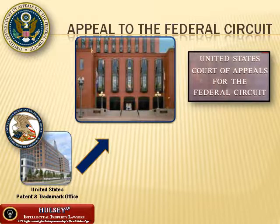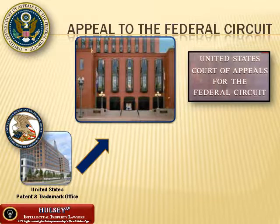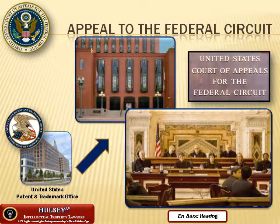The decisions of the Federal Circuit, particularly in regard to patent cases, are unique in that they are binding precedent throughout the United States within the bounds of the Court's subject matter jurisdiction. Decisions of the Federal Circuit are only superseded by decisions of the United States Supreme Court. The review by the United States Supreme Court is discretionary, so Federal Circuit decisions are often the final word. Within the United States Court of Appeals, depending on the case, an en banc hearing may be held.